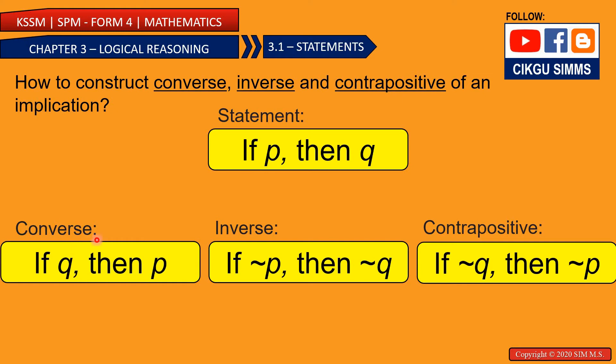Converse means you make Q at the front then P at the back, so if Q then P.